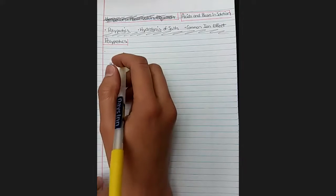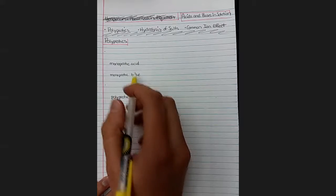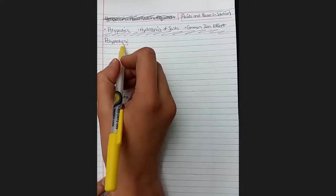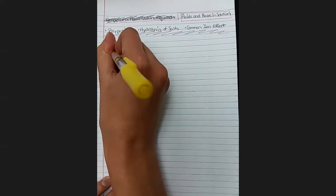So we'll start with polyprotic acids. These are acids and bases that donate multiple protons. And so if the word polyprotic exists, then we can also start by talking about monoprotic.